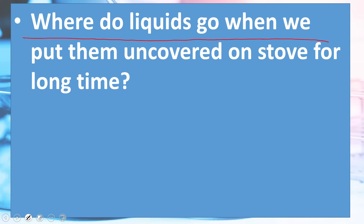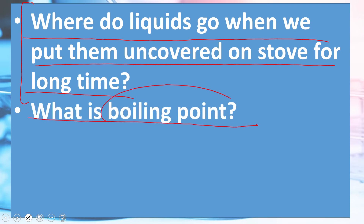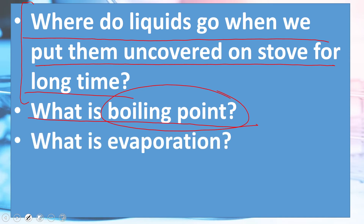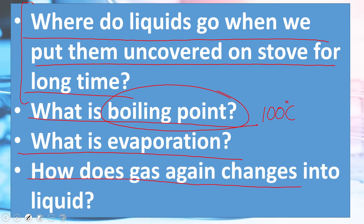Now is the time for evaluation. Where do liquids go when we put them uncovered on a stove for a long time? Agar aap liquids ko uncovered chhod dein aur bohut dair tak woh aag pe rakhi rahe, toh woh evaporate ho jati hai — turn into gas and go into the air. What is boiling point? The temperature at which a liquid turns into gas is called its boiling point. The boiling point of water is 100 degrees centigrade. What is evaporation? When water evaporates into the air, this is called evaporation. How does gas change back into liquid? It is the process called condensation through which gas changes back into liquid.